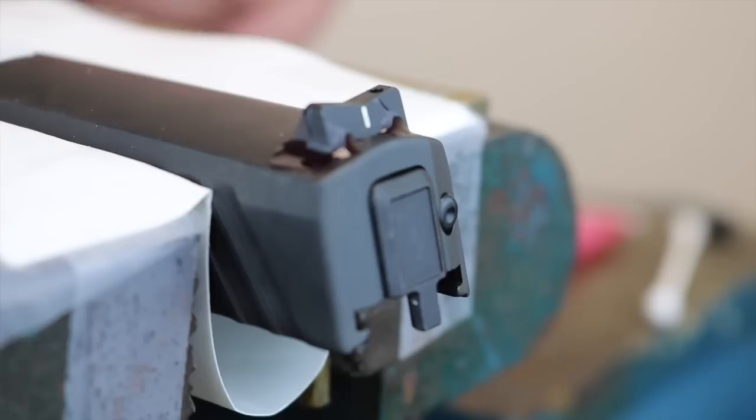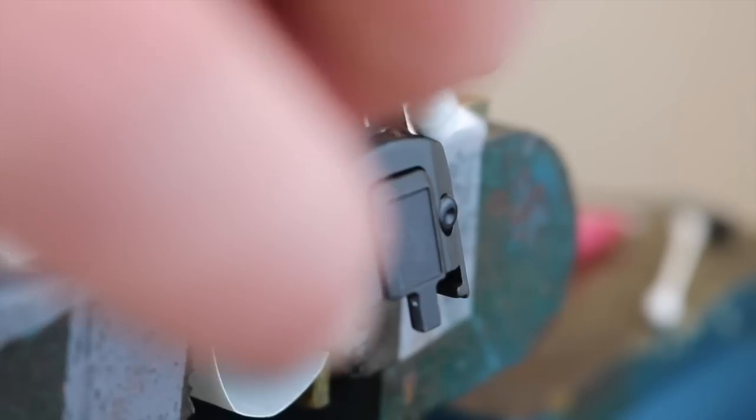Now that that's had a couple of minutes to allow the red thread locker to creep in, we're going to go ahead, just like the front sight, take a Q-tip and remove the red Loctite that is still sitting out.